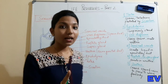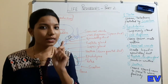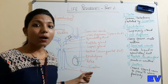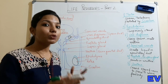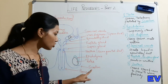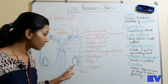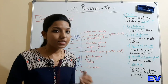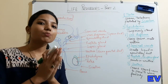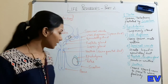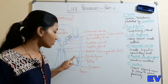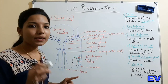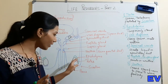Sperms and testosterone are produced in the testis. The testis is covered and protected by a pouch-like structure called the scrotum. Around the testis, there is a coiled structure shown in green - that is called the epididymis. After sperms are produced in the testis, they are temporarily stored in the epididymis.